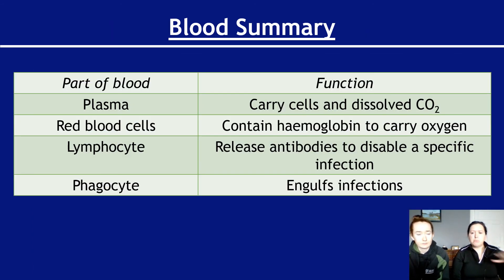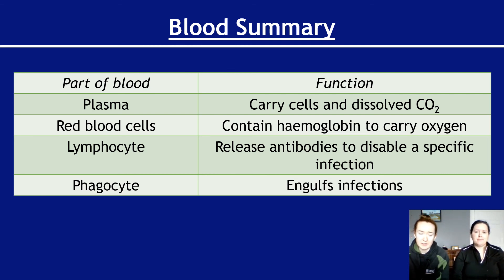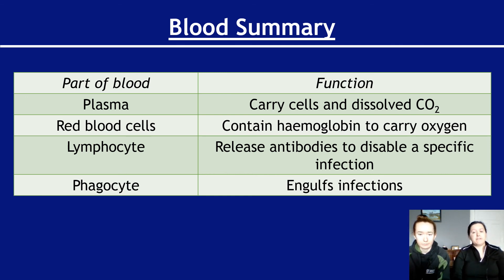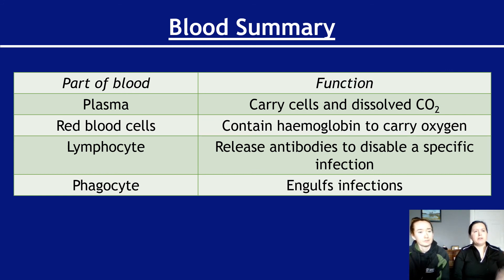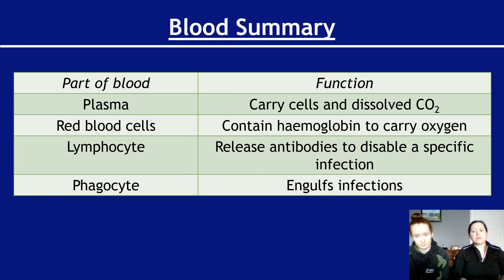So let's round off this section on blood. Plasma is a part of blood and it carries cells and dissolved carbon dioxide. Red blood cells contain haemoglobin, which is used to carry oxygen in the form of oxyhaemoglobin. Lymphocytes, which are a type of white blood cell, release antibodies to disable a specific infection. And phagocytes don't care about what type of pathogen it is - they will go up to any pathogen and engulf and digest it. That's the end of blood. The next video is on blood vessels - essentially looking at the structures that carry these substances through the body in order to keep us alive. See you then.